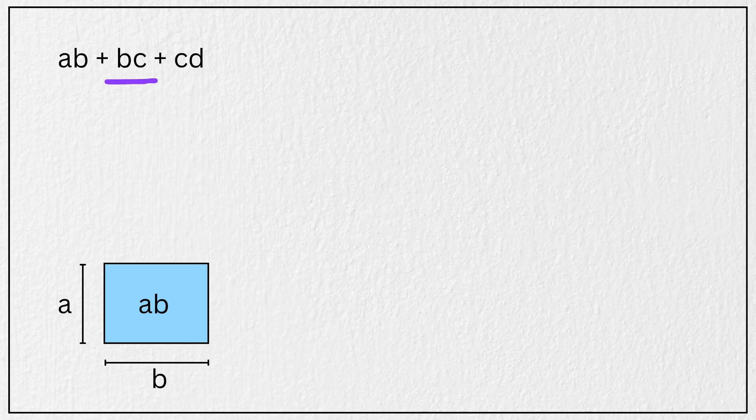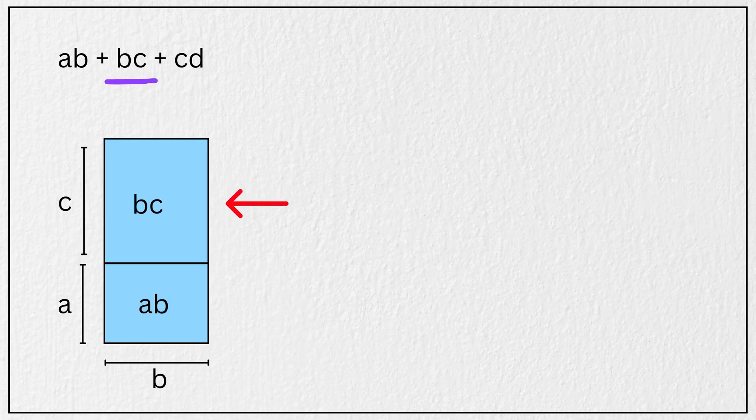Now to represent B times C, we extend the rectangle by adding strip of length C on height B. That gives us a rectangle with area B times C.